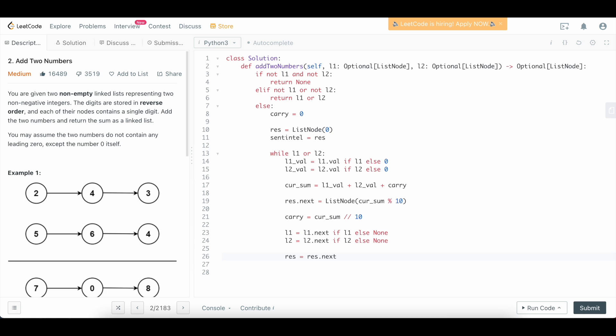Cool. So at this point, the while loop will go until either l1 or l2 still has values, and then it'll terminate when both of them are null. Now what we need to do is just check that we don't have a carry left over. If we do, we need to add that to our solution.